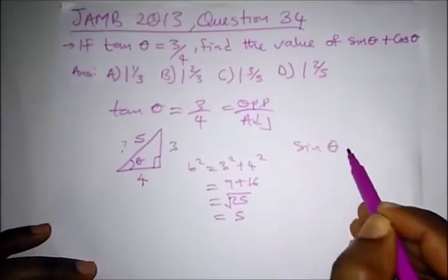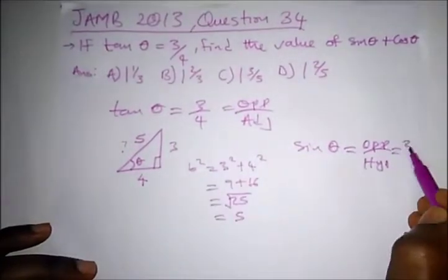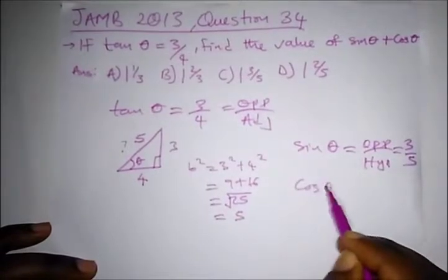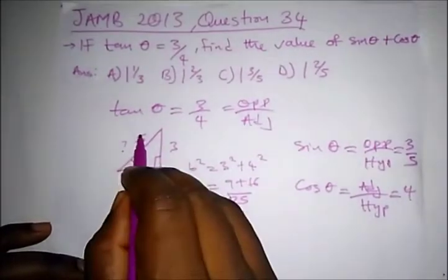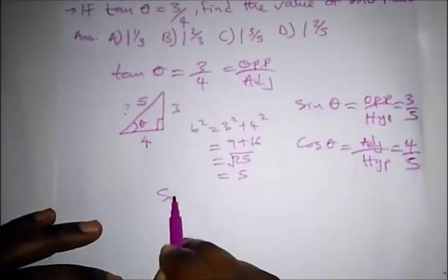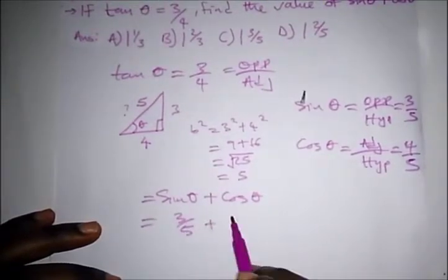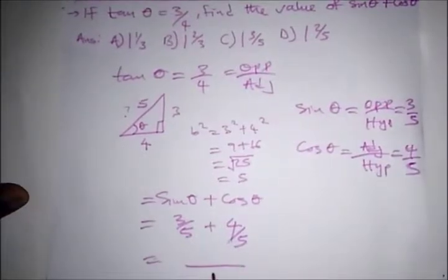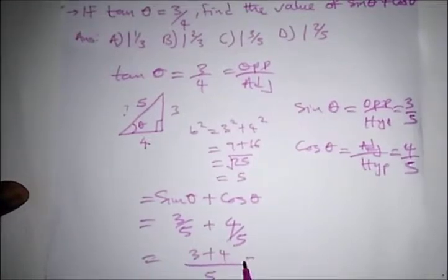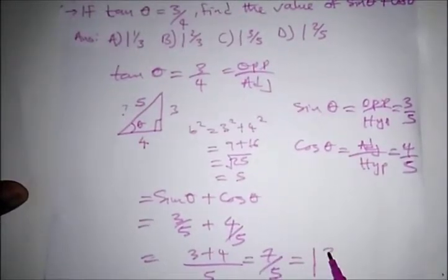The question asks for sin θ plus cos θ. sin θ is opposite over hypotenuse, which is 3 over 5. cos θ is adjacent over hypotenuse, which is 4 over 5. So sin θ + cos θ = 3/5 + 4/5 = 7/5. Converting to a mixed fraction, that gives us 1 and 2 over 5. The correct option is option D.